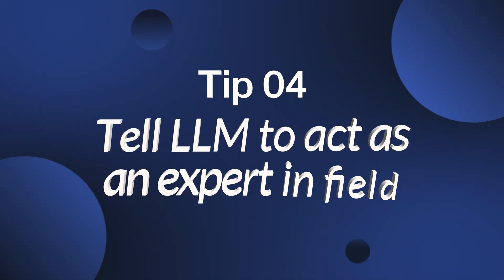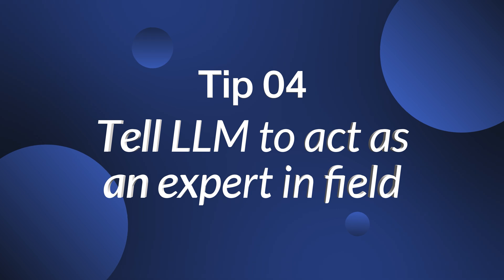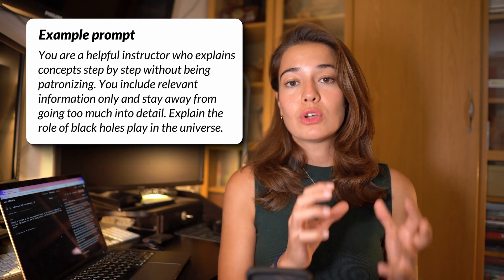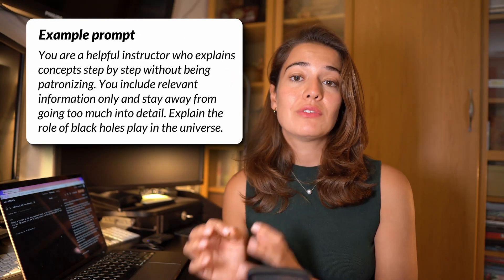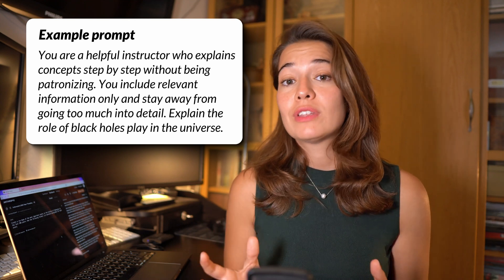Tip number four: tell the LLM to think like it has a certain expertise — this could be an astrophysicist or a Michelin star chef. It might seem trivial, but it gives the LLM valuable context to understand how to present data to you. And it doesn't have to be a specific role — you can also ask the LLM to behave in a certain way, for example: 'you focus on key details, you leave out irrelevant information, you have perfect command of the English language.' Just remember to keep these instructions concise for best performance.